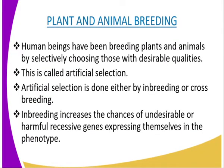We are going to have an explanation of plant and animal breeding. Knowledge of genetics has been put to practical use in areas ranging from plant and animal breeding. We also have other areas which include blood transfusion and genetic counselling. In this lesson, we are going to deal with plant and animal breeding. Over time, human beings have been breeding plants and animals by selectively choosing those with desirable qualities. This process is referred to as artificial selection, which is done either by inbreeding or crossbreeding.